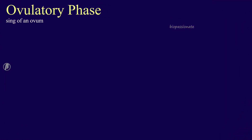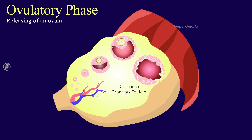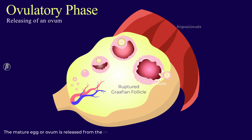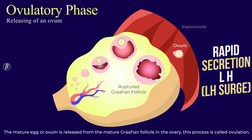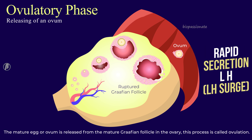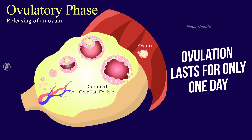Ovulatory phase — releasing of an ovum. The mature egg or ovum is released from the mature Graafian follicle in the ovary. This process is known as ovulation. Ovulation occurs due to the rapid secretion of luteinizing hormone, also called the LH surge. Ovulation lasts for only one day.